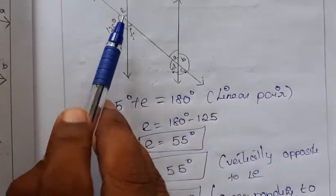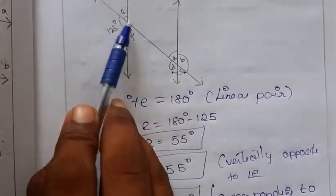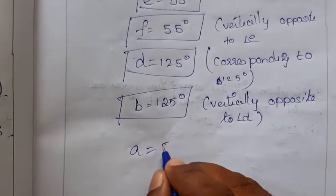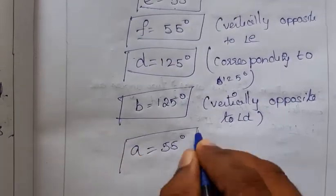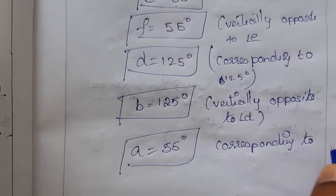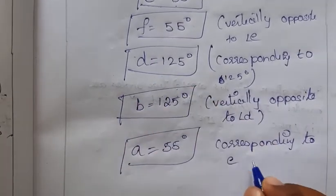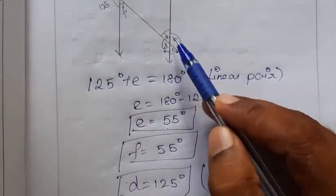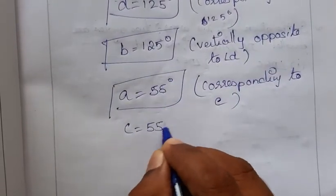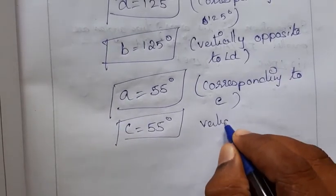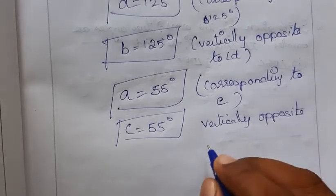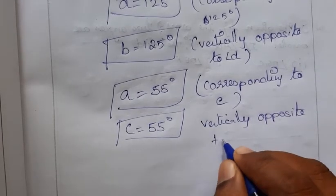E and A are corresponding angles, so A equals E equals 55 degrees. C is vertically opposite to A, so C equals 55 degrees. It is important to write the condition used when deriving each angle.